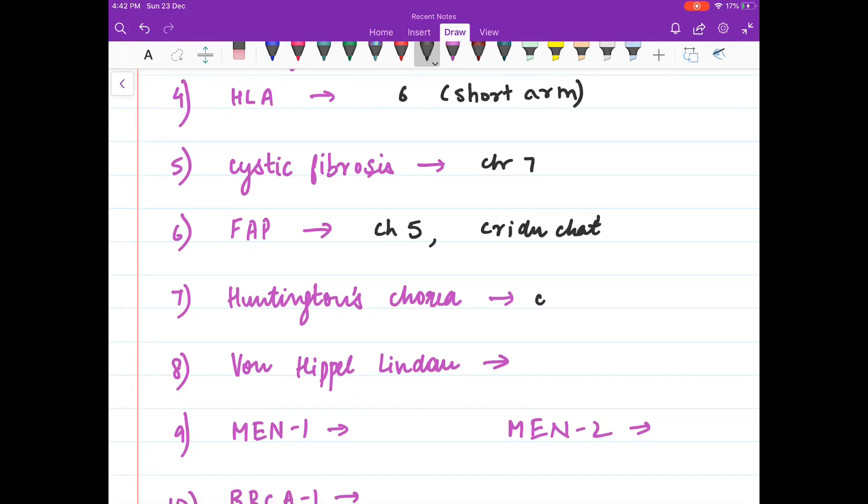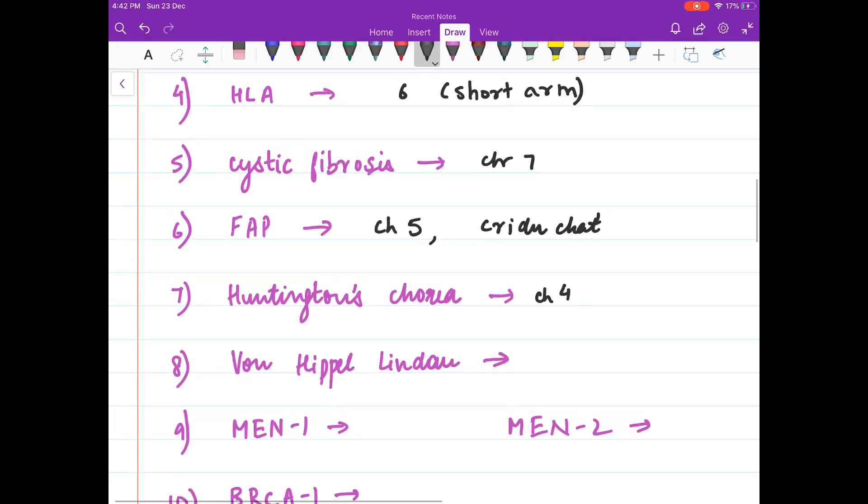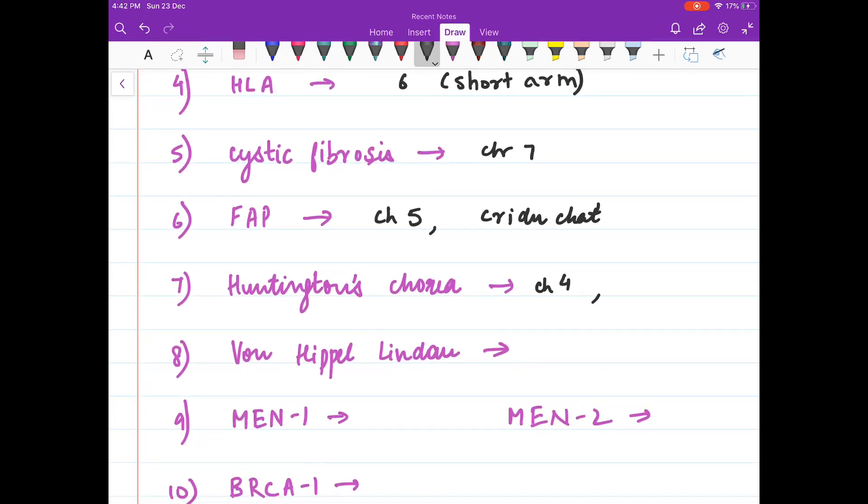Huntington's chorea, chromosome 4. What other disease you know with chromosome 4? It is polycystic kidney disease. Polycystic kidney disease, this is chromosome 4 and 16.